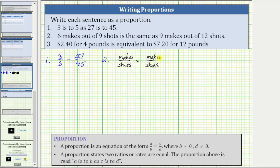When writing the proportion, we leave the units off. We have six makes out of nine shots is the same as nine makes out of 12 shots.